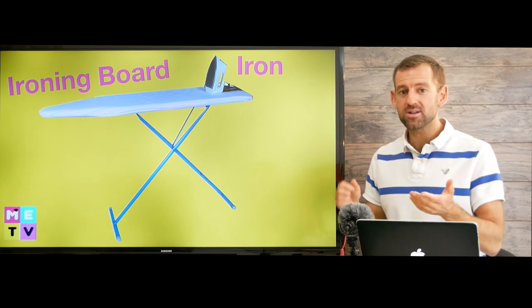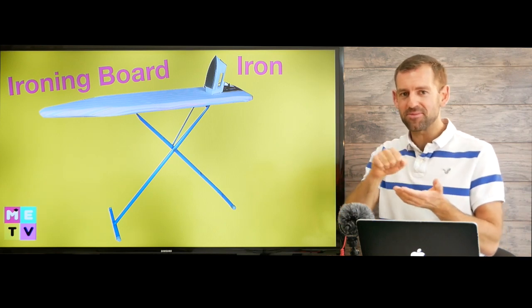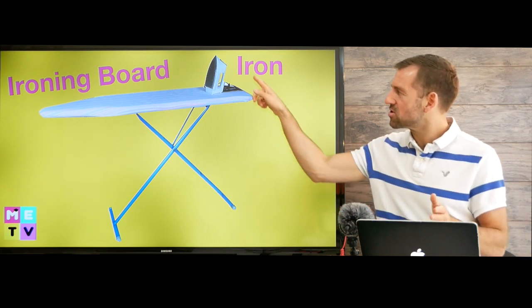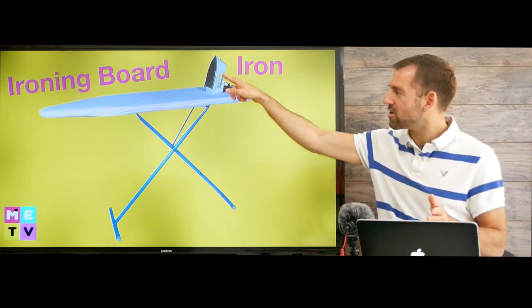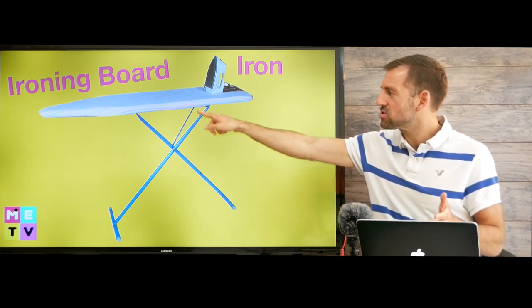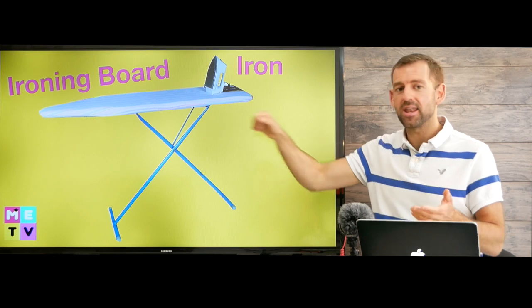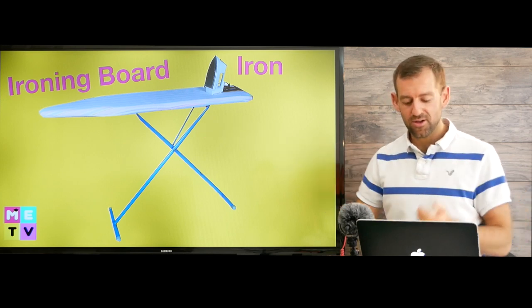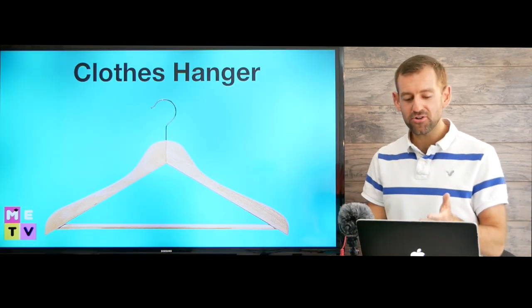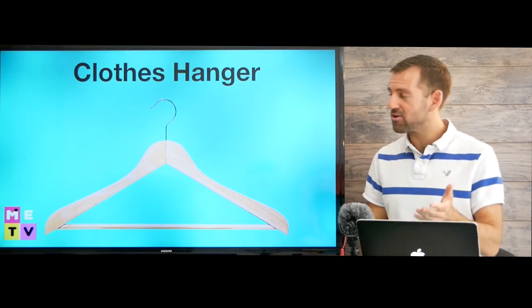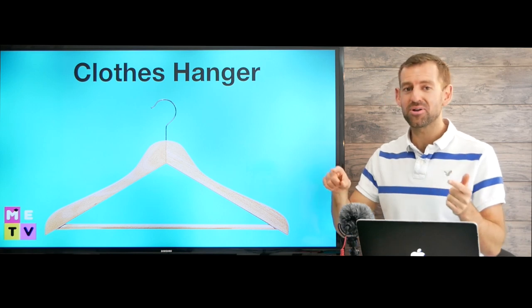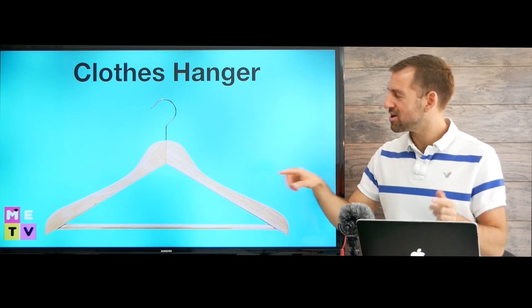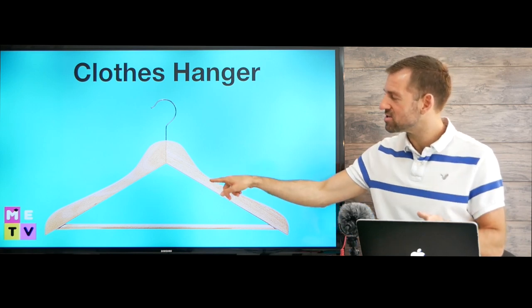After you finish drying your clothes, you might want to iron them. This is called an iron and this is called an ironing board. After you finish ironing, you need to hang up your clothes. This is called a hanger.